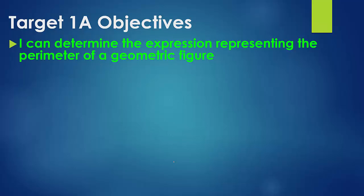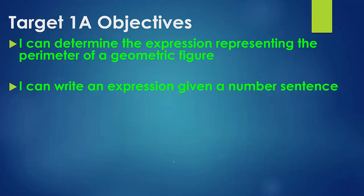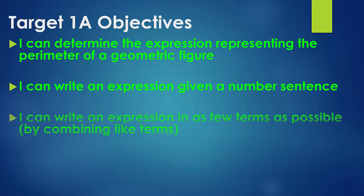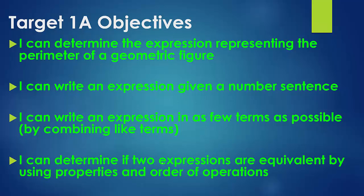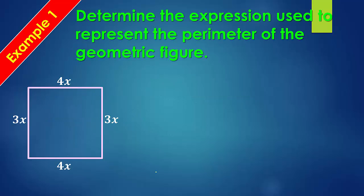First, I can determine the expression representing the perimeter of a geometric figure. Second, I can write an expression given a number sentence. Third, I can write an expression in as few terms as possible. This is new and this is what we're going to be covering today along with, third, I can determine if two expressions are equivalent by using properties and order of operations. All right, so let's just start with a quick review.